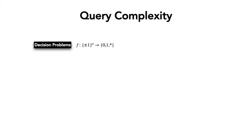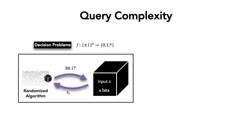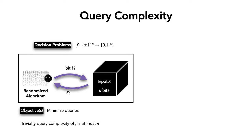In this talk we focus on decision problems. So f is a function of n bits which outputs either accept, reject, or don't care — you might have a promise problem or a partial function. In the model of query complexity, the algorithm interacts with the input as a black box, asking for particular bits. The objective is to compute f while minimizing the number of queries; trivially, the query complexity is at most n.